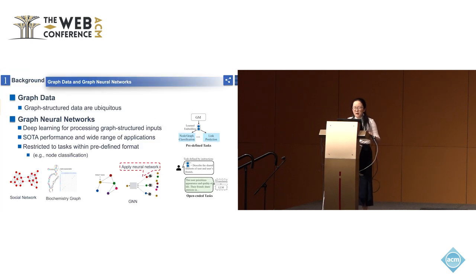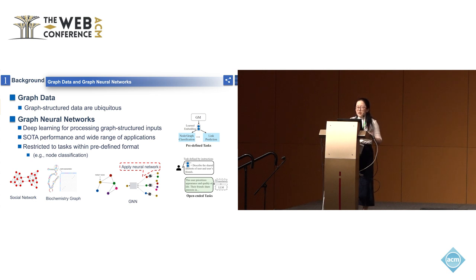Let's begin from the background. As we know, graph structure data are ubiquitous — for example, social networks and biochemistry graphs. In recent years, deep learning has pushed forward performance on graph data. Typically, by using neural network models, graph neural networks combine node feature information with graph structure and have achieved state-of-the-art performance on a wide range of tasks.